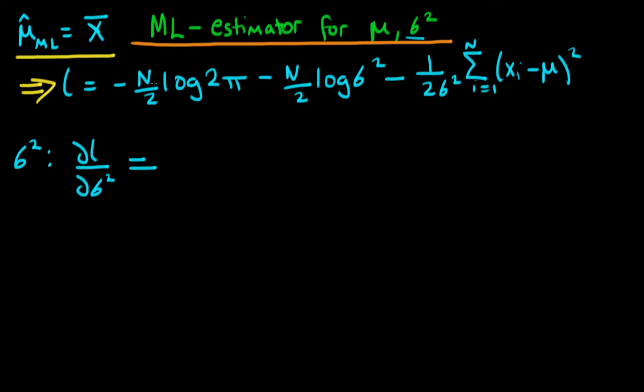If we do that, this first term is going to disappear because that doesn't have any sigma squared in it. So this next term is just going to become minus N over 2 times sigma squared, because when you differentiate the log, it goes to 1 over x.